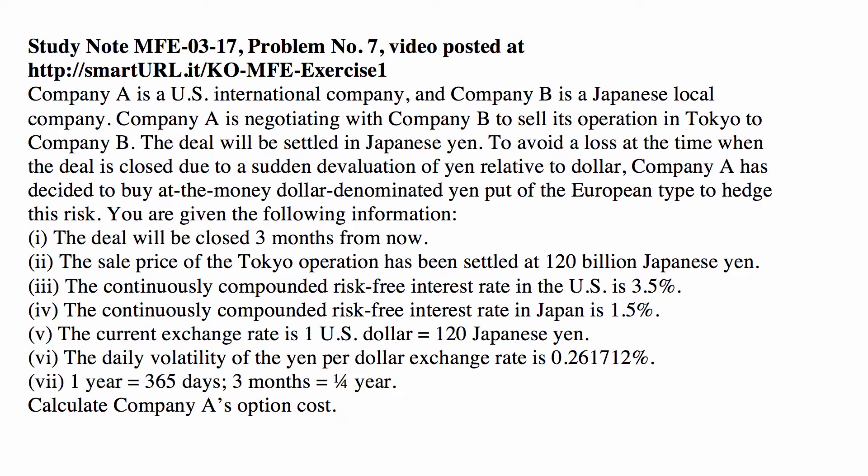You are given the following information. The deal will be closed three months from now. The sale price of the Tokyo operation has been settled at 120 billion Japanese Yen. The continuously compounded risk-free interest rate in the US is 3.5%. The continuously compounded risk-free interest rate in Japan is 1.5%. The current exchange rate is one US dollar per 120 Japanese Yen. The daily volatility of the Yen per dollar exchange rate is 0.261712%.